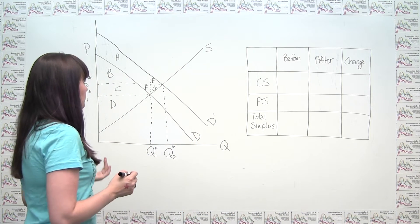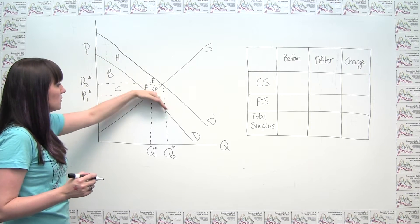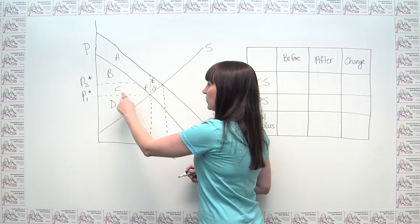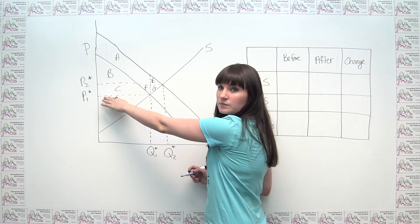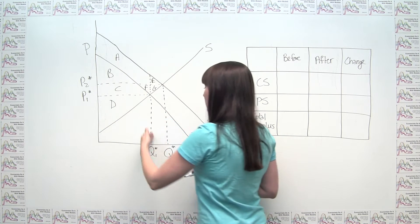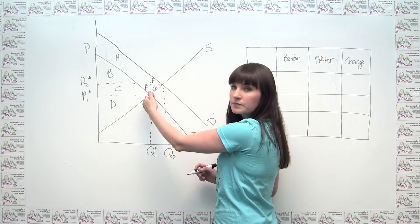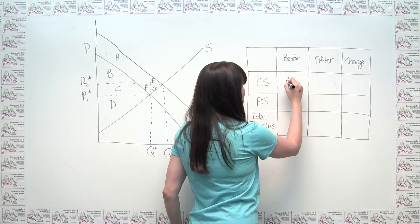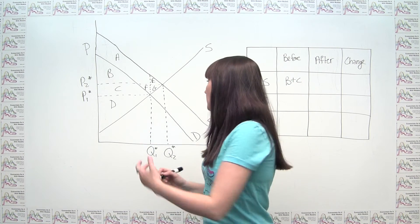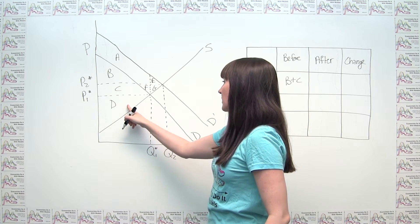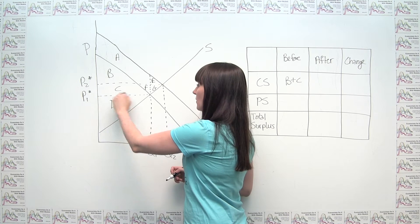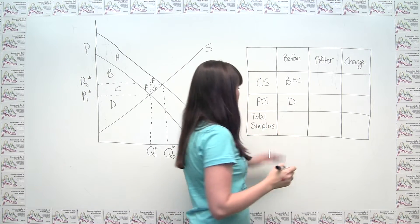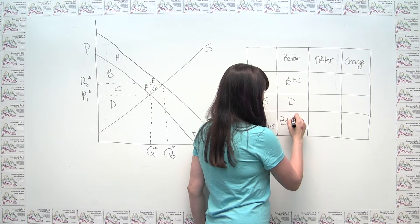In the before scenario, when the demand curve was at D, consumer surplus is everything above the relevant price P1*, below the demand curve, to the left of the equilibrium quantity being transacted. So our old consumer surplus is B plus C. Our old producer surplus is D — the area above the supply curve, below the producer's price, to the left of equilibrium quantity. So our total surplus before is B plus C plus D.